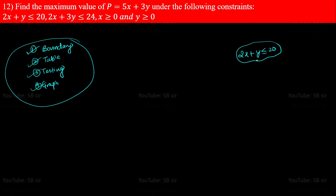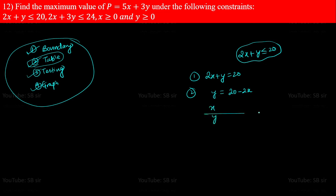For 2x + y ≤ 20, first find its boundary: 2x + y = 20. Second, draw the table to find points through which this line passes. Isolate y: y = 20 − 2x. Put different values of x so you don't get decimal values of y. When x = 0, y = 20; when x = 10, 2×10 = 20, so y = 0; when x = 5, y = 20 − 10 = 10.